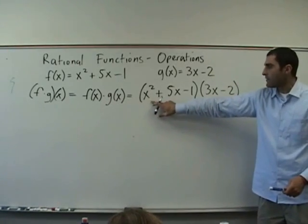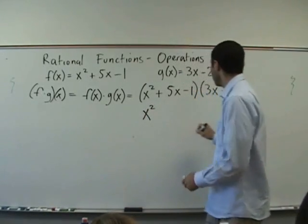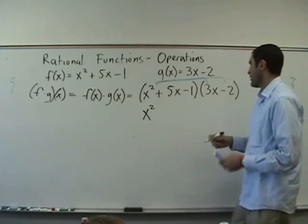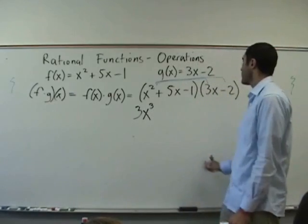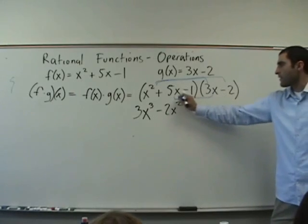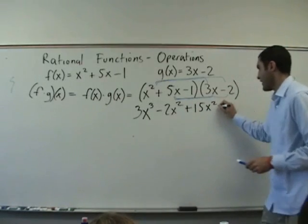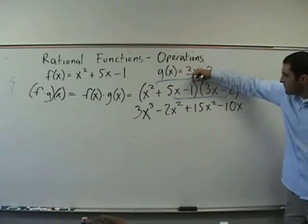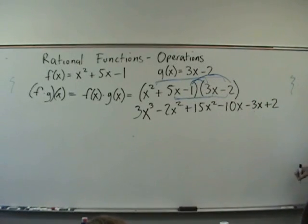So, let's carry this x squared. I mean, there's multiple ways to do it. We'll do x squared times 3x, x squared times negative 2. So, that's 3x cubed minus 2x squared. And then we'll take the 5x, 15x squared minus 10x, good. Negative 3x. Negative 3x plus 2.